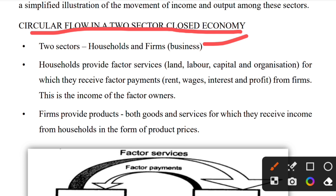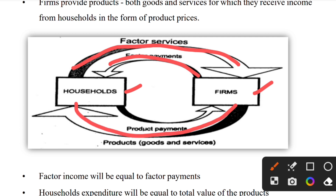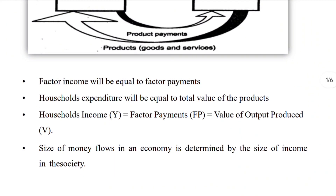The firm provides products — both goods and services — for which they receive income from households in the form of product prices. The household provides factor services such as land, labor, and capital to the firm, and the firm provides goods and services to the household, who in turn pays the price of the product. This is the circular flow.